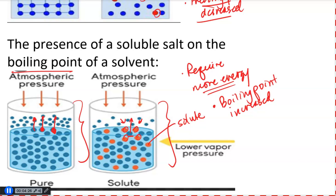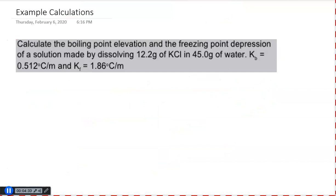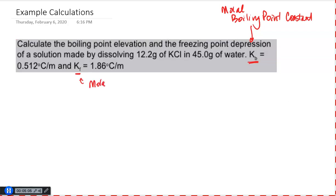Now that we have some qualitative ideas as to why this happens, let's talk about how we attach some numbers to this. I have an example problem here. They're asking me to calculate the boiling point elevation and the freezing point depression of a solution made by dissolving 12.2 grams of potassium chloride in 45 grams of water. I'm also provided two constants: KB, the molal boiling point constant, and KF, the molal freezing point constant.